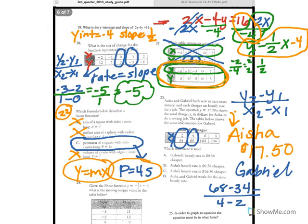So I would take 68 minus 34 and 4 minus 2 to figure out what my slope is. So I'm going to do 68 minus 34. And then 4 minus 2 is 2.